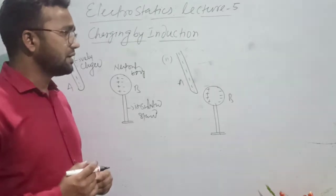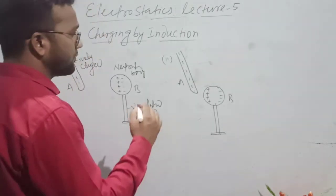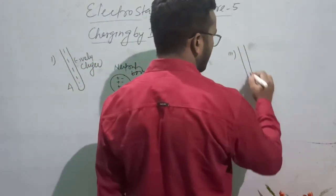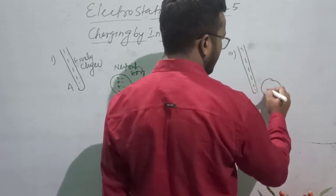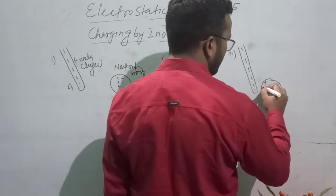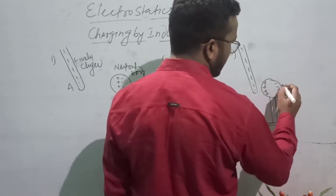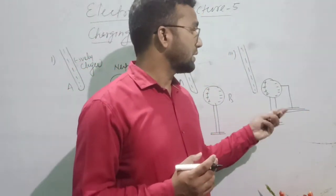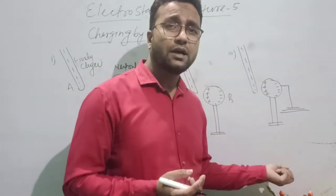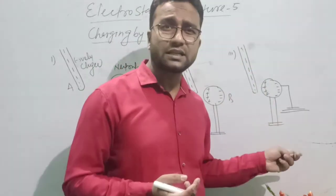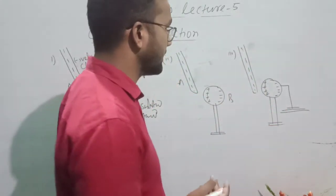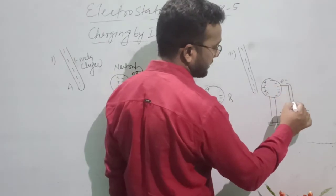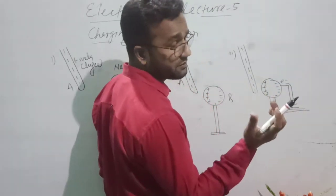This is the second step. For the third step, we have to do earthing. So what is earthing? This is our negative charge rod and this is the neutral body. Now, the earthing concept is that electrons can flow between the body and earth based on potential difference.